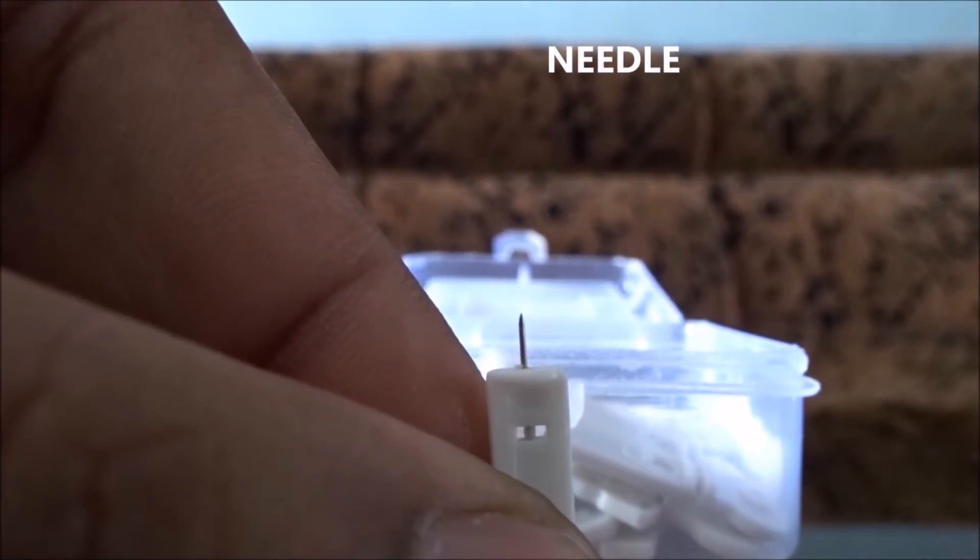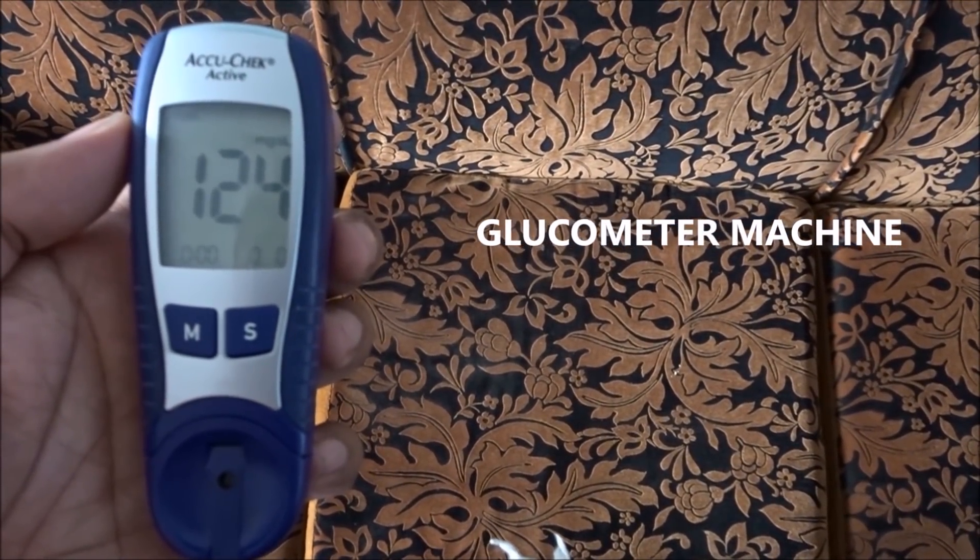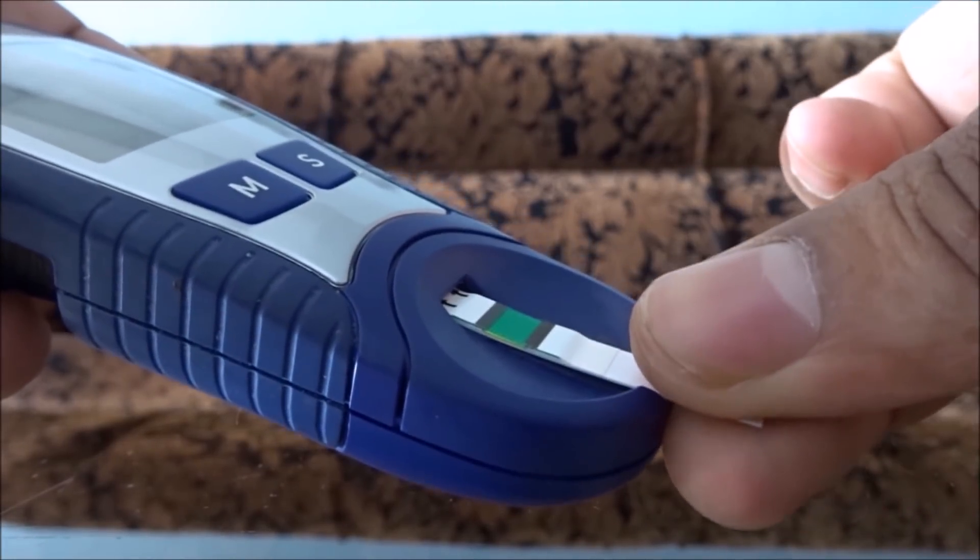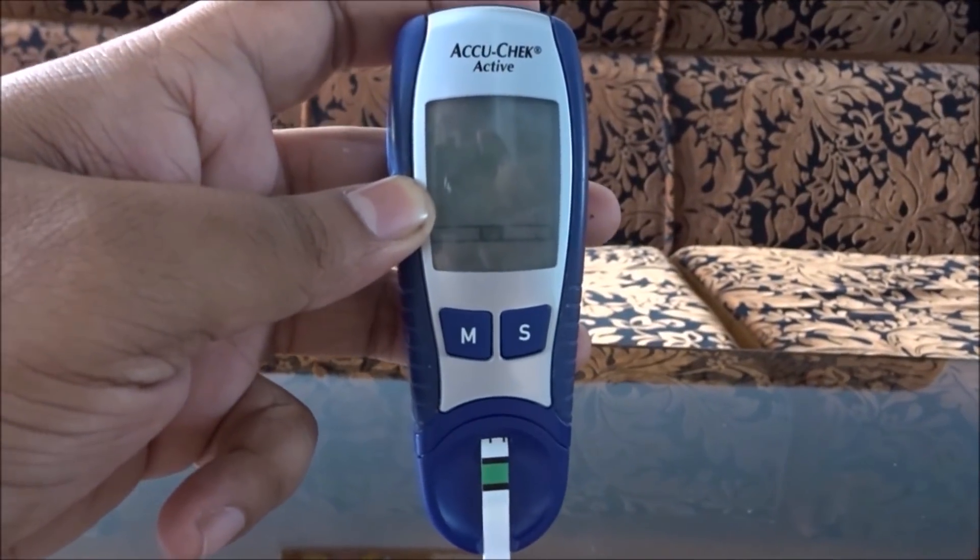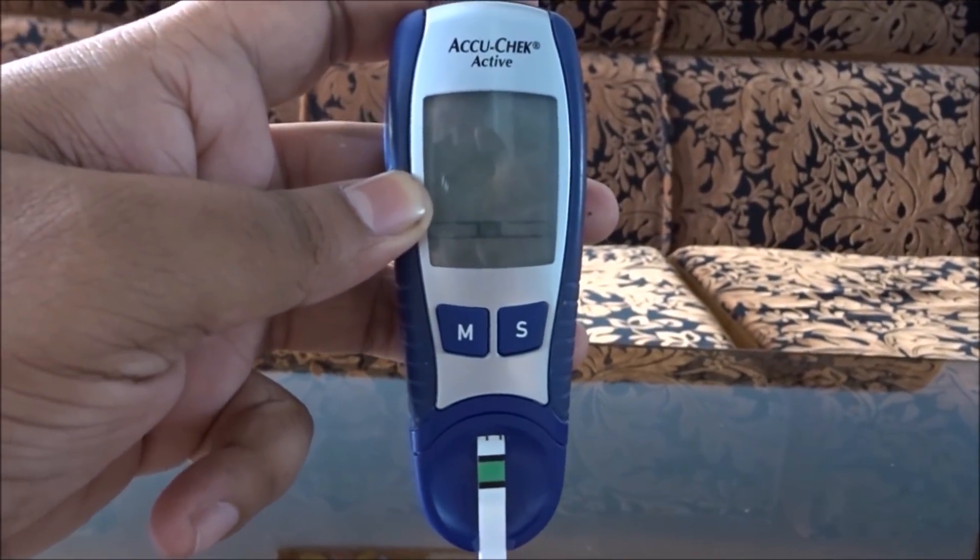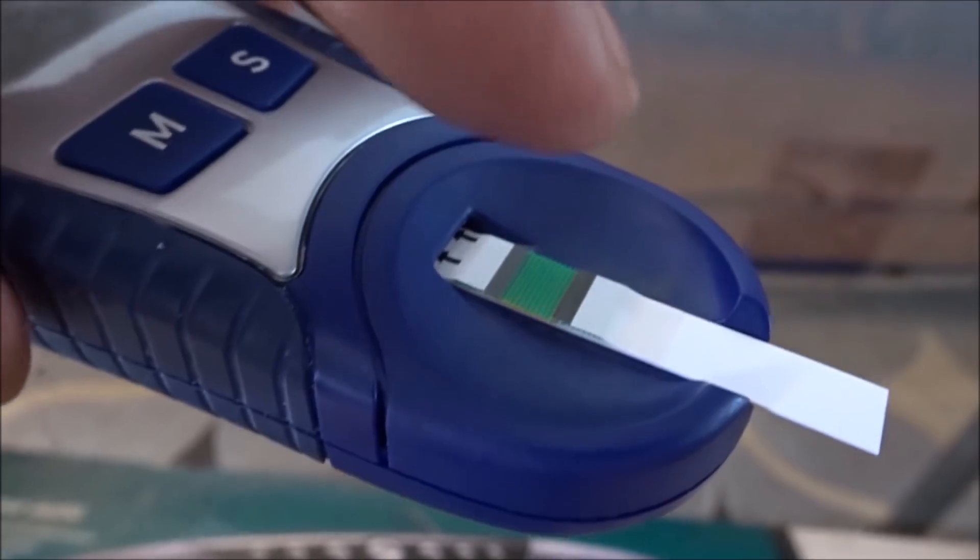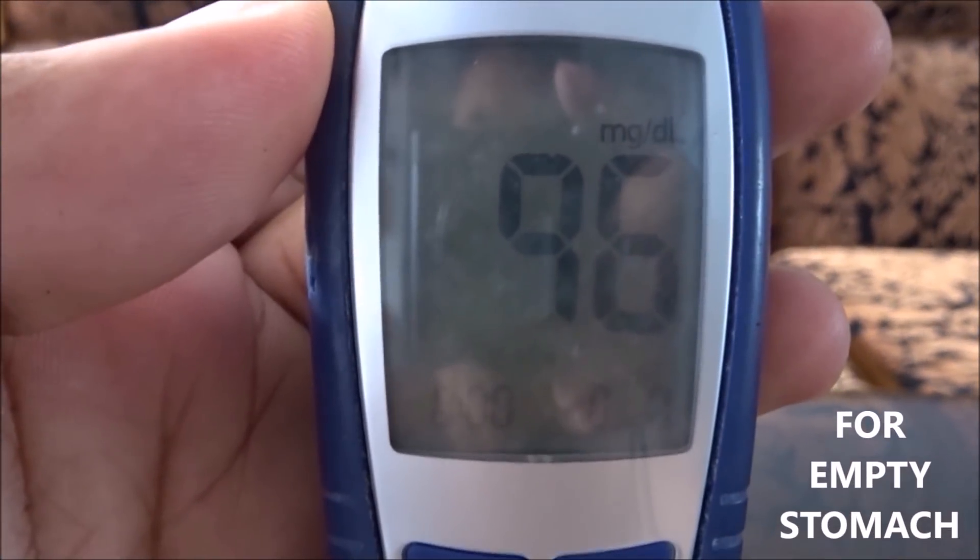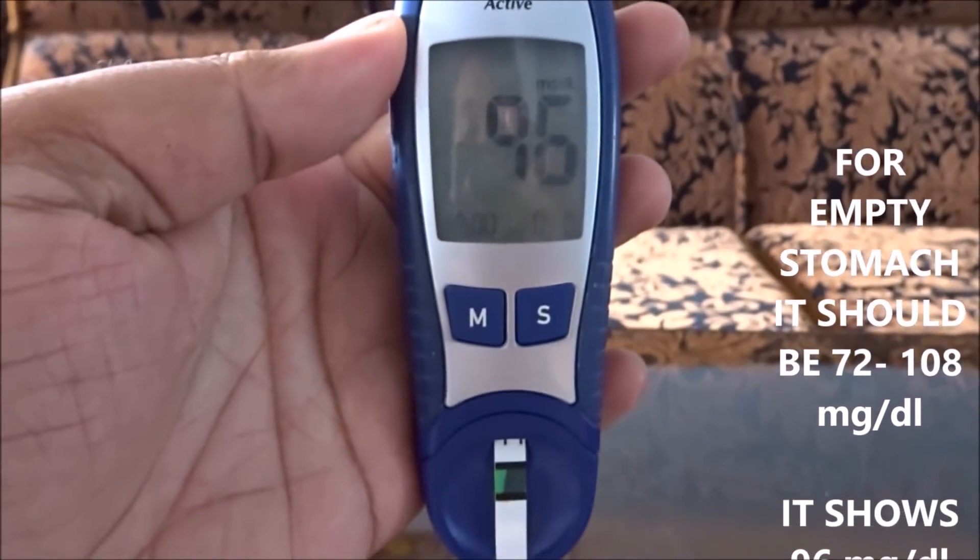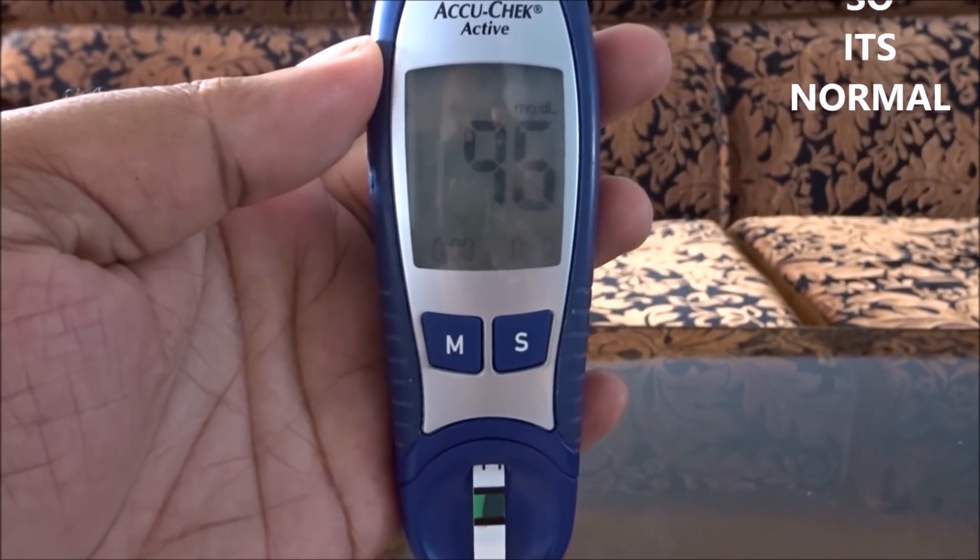To test blood sugar, firstly put the blood testing strip right place on the machine. Then it beeps with light and then the machine requires the blood sample. For blood sample, set the pen needle on your fingertip and press the trigger and when the blood comes out, put that blood on the test strip marking point and wait for a couple of seconds. I tested on empty stomach and it shows 96 mg per deciliter, and for empty stomach it should be 72 to 104 mg per deciliter, so it's normal.